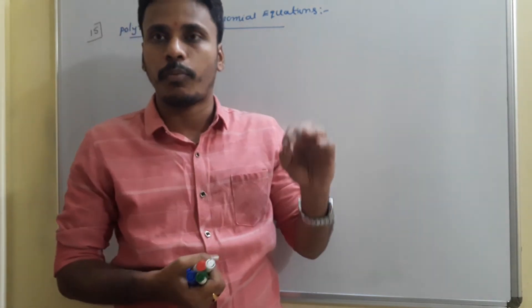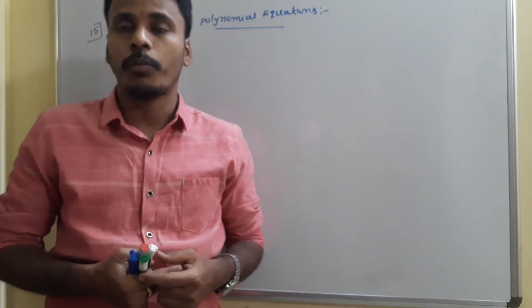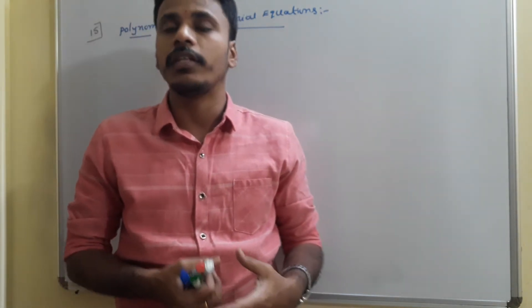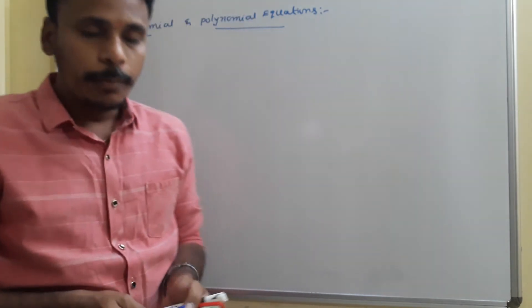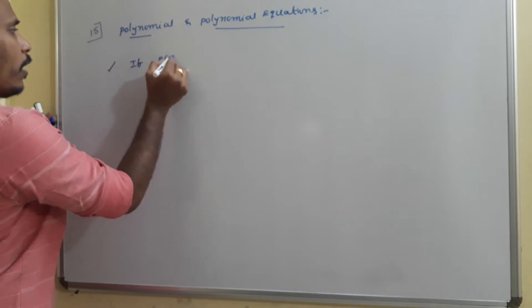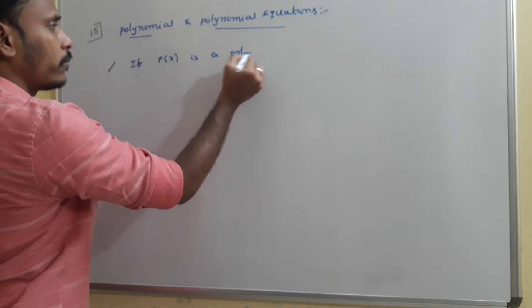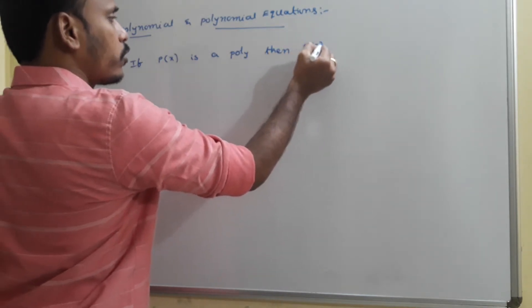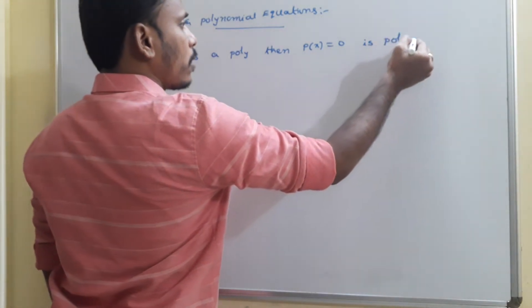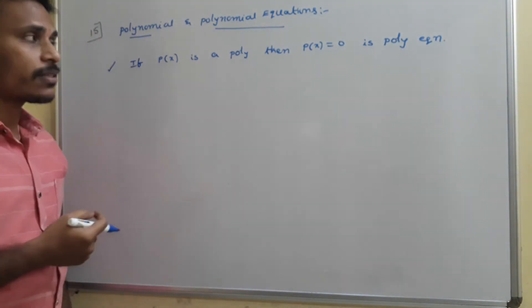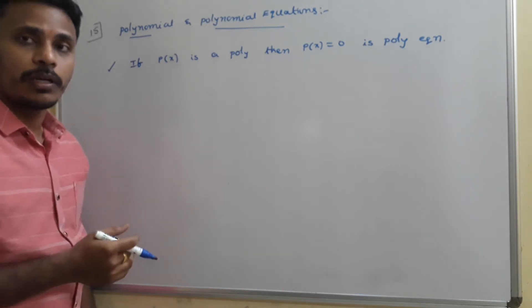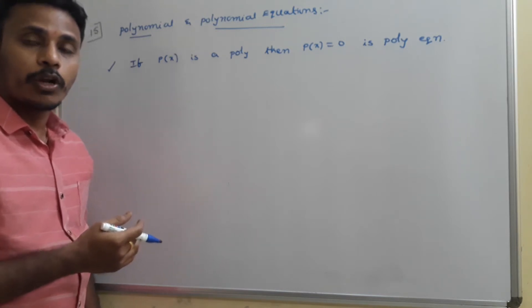I am going to introduce polynomial equations based on polynomials. There are some more problems related to polynomials I will discuss further one by one. After dealing with the polynomial equations, at the end I will deal with different problems related to polynomials and polynomial equations. Basically, if P(x) is a polynomial, then P(x) = 0 is a polynomial equation. You just take any polynomial and that polynomial equal to 0 is considered as a polynomial equation.